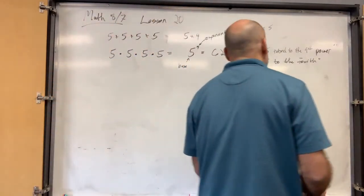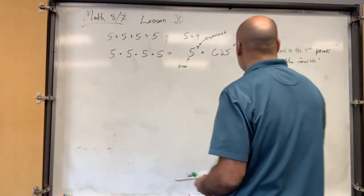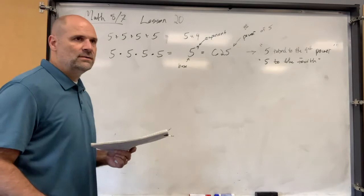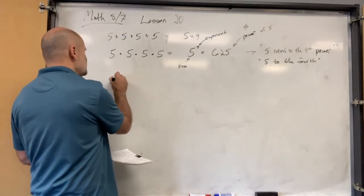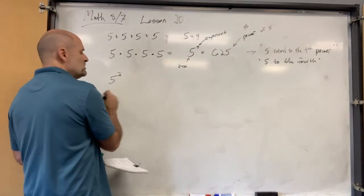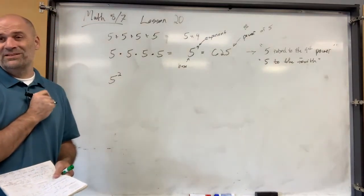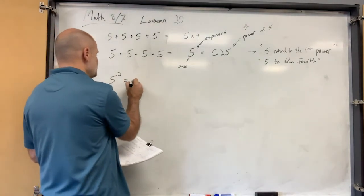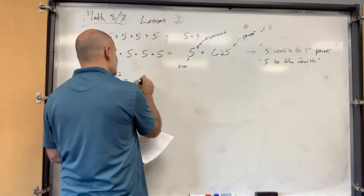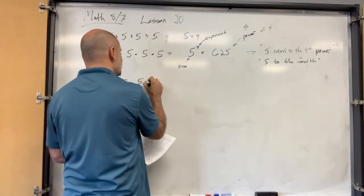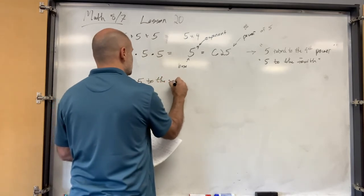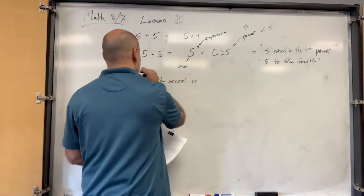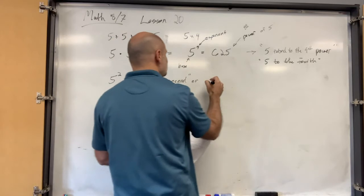Now there are some other special ways. If we're raising something to the 2nd power, how do we say that? There's another special way to say that. 5 squared. So this is 5 to the 2nd, or 5 squared.